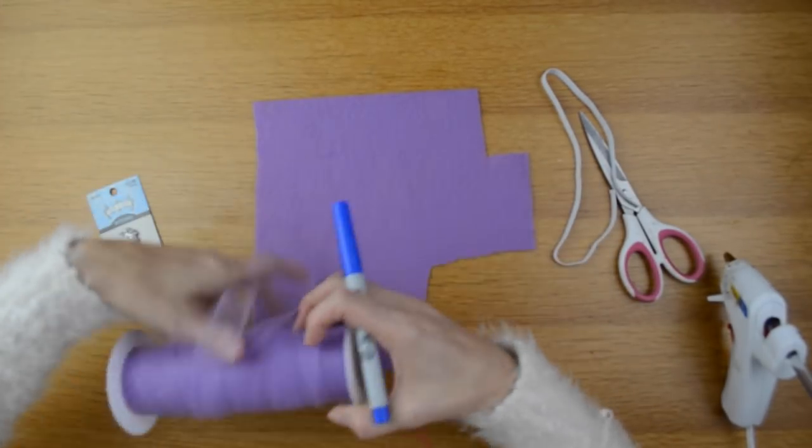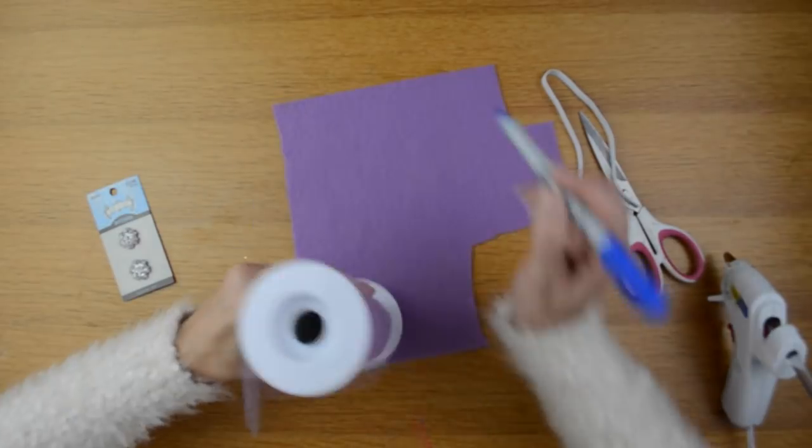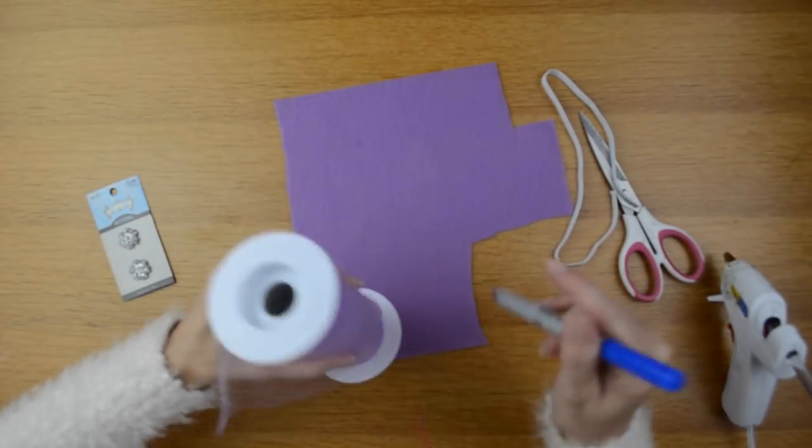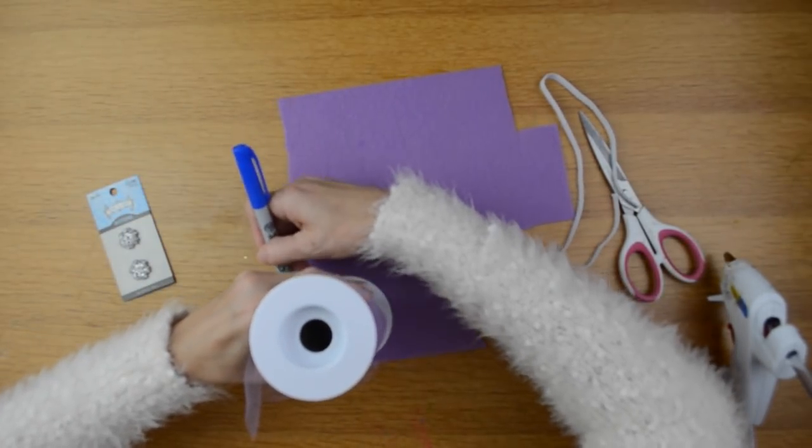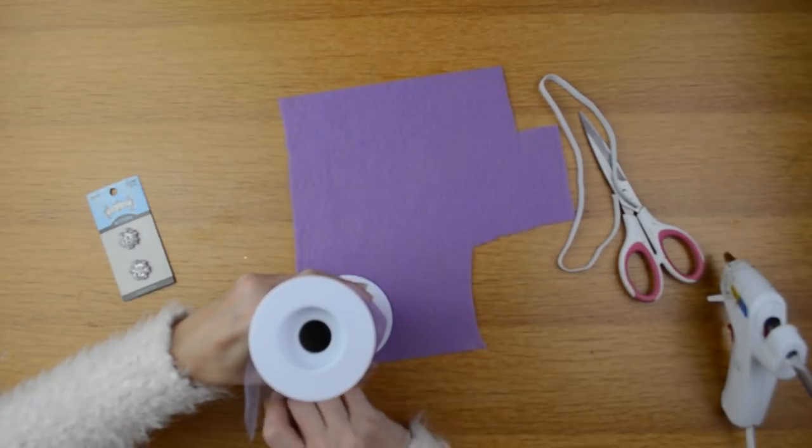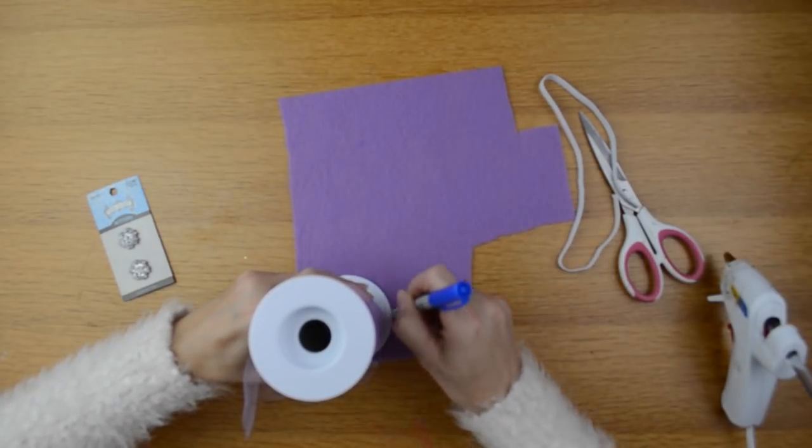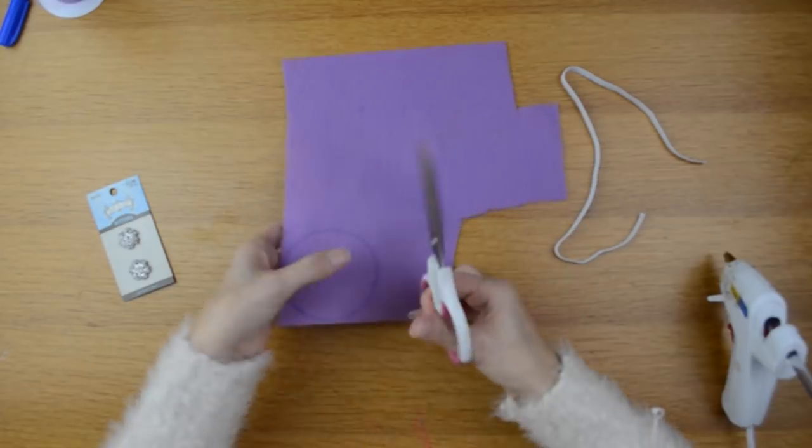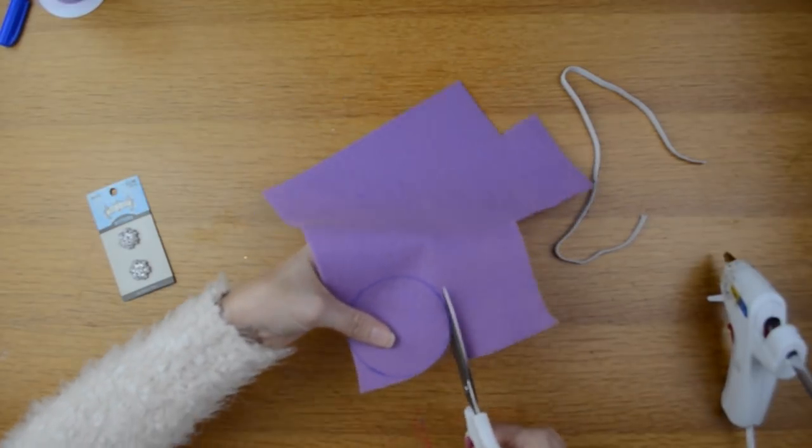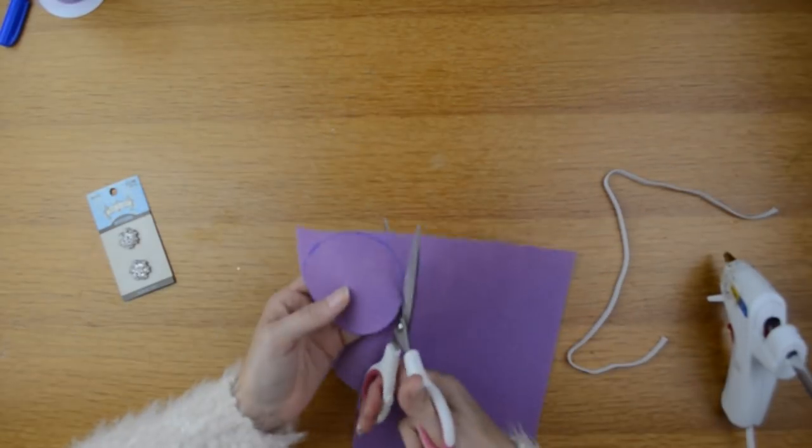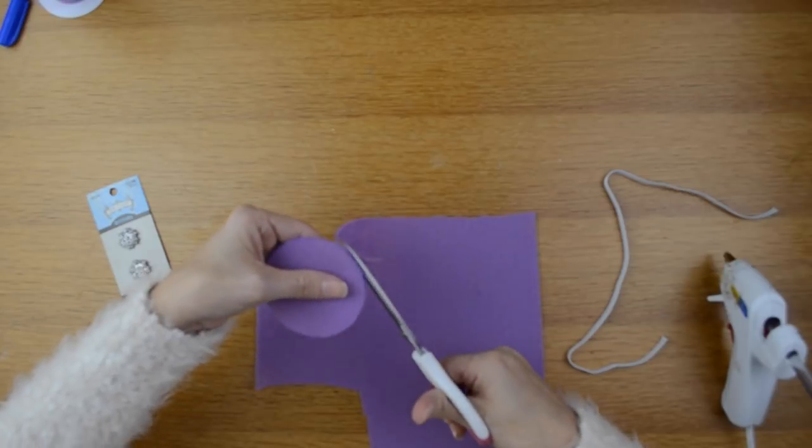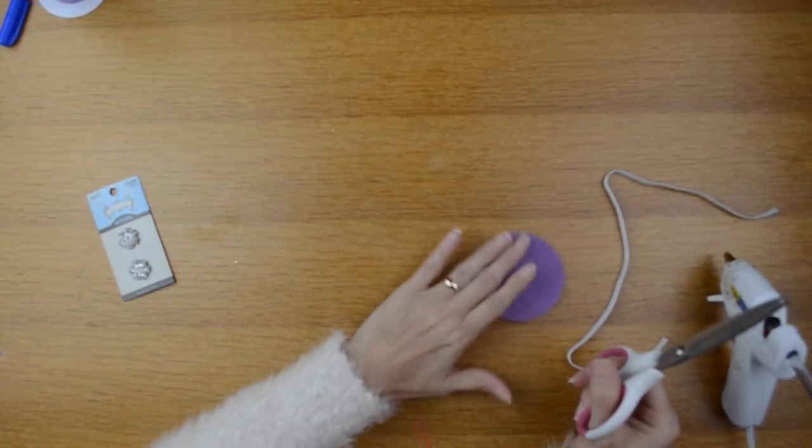First I am going to take my tulle roll. I'm going to trace out a circle using my spool here, and then I'm going to cut that out. I'll put that to the side for now.